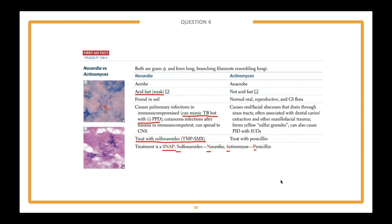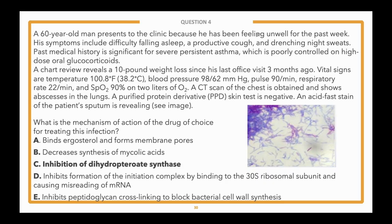Because of its acid-fast nature and similar disease process, pulmonary nocardiosis is frequently mistaken for TB. For Nocardia infections, sulfonamides are the drug of choice and these work by inhibiting dihydropterate synthase. Keep in mind that actinomyces is not acid-fast — that helps differentiate. Answer choice E (inhibits peptidoglycan cross-linking — penicillin) is used for actinomyces, which most commonly causes oral and facial abscesses, not lung abscesses, and is not acid-fast — incorrect.